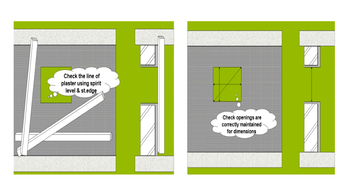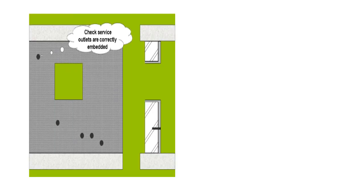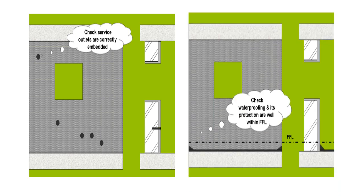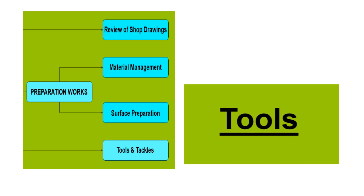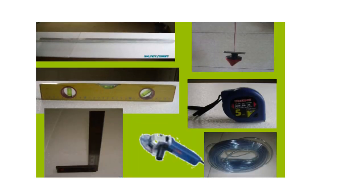Check openings are correctly maintained for dimensions. Check services outlets — check that outlets are correctly embedded before tiling has started. Check waterproofing is done to perfection and well within the finished floor level. The images will show you what tools you require, like a grinder, plumb bob, tip, water tubes, straight edge, etc.